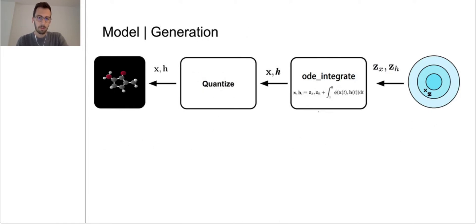Finally, to generate samples, we run the pipeline the other way around. We first sample z from a noise distribution and we pass it through the inverse of function f. Then we map the h values to discrete and we obtain the generated molecule.